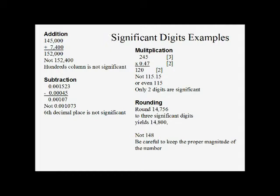For multiplication: 245 times 0.47. 245 has three significant digits and 0.47 has two. Our calculator gives us 115.15, but we are only allowed two significant digits. The third digit is 5, so when we truncate, we add one to the second digit — that 1 turns into 2. We have to keep the magnitude, so the answer is 120, not just 12.